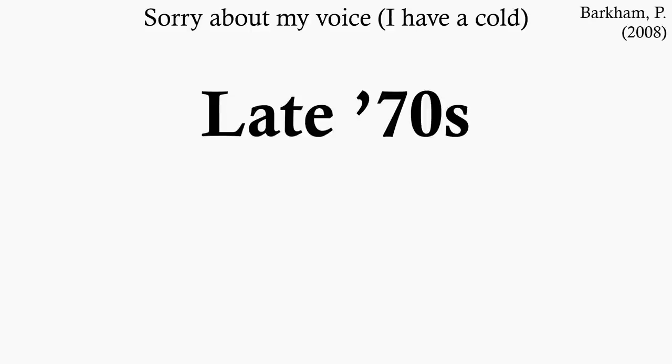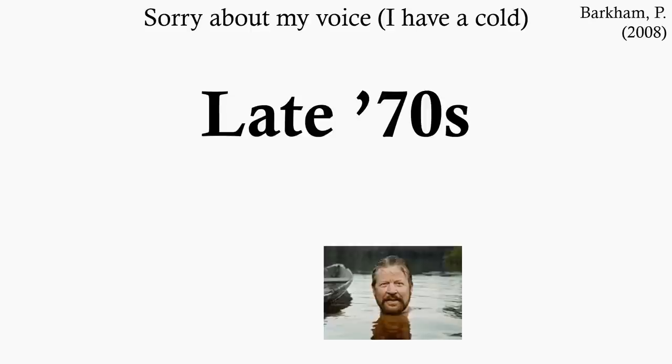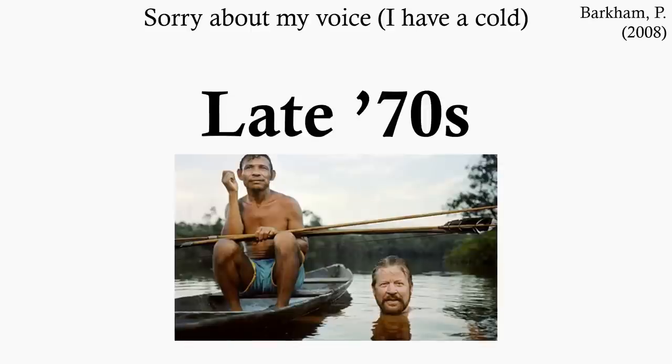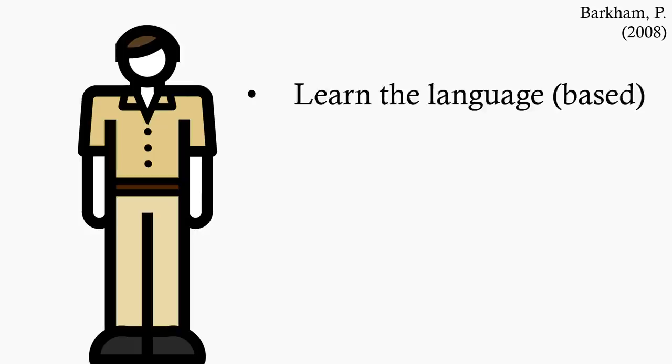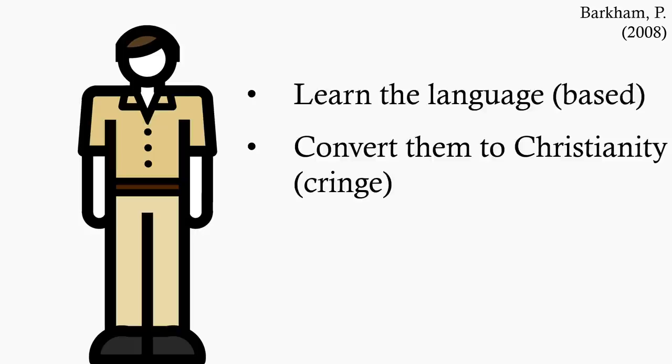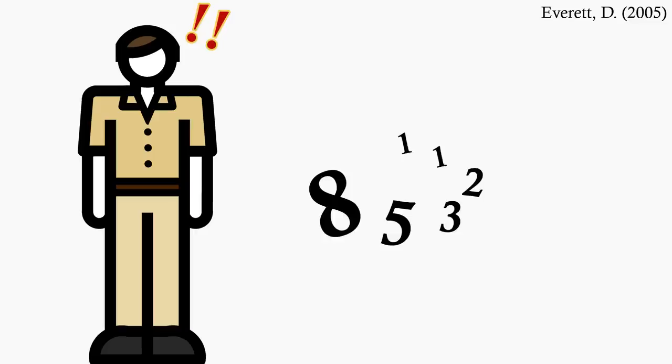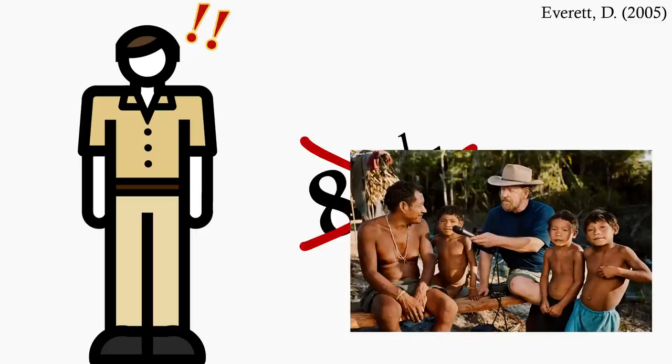In the late 1970s, the anthropologist Daniel Everett was dispatched to an Amazonian tribe with about 350 members, intending to learn their language and convert them to Christianity. But what he realized about this language was something quite unique. It had no words for numbers. This tribe, because of their language, had no way of counting.